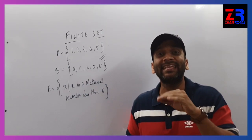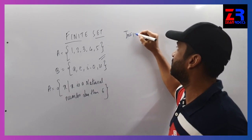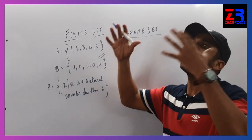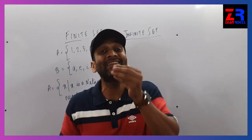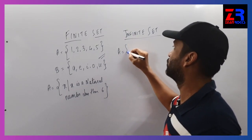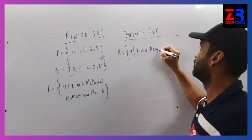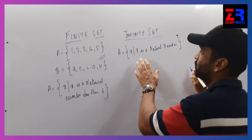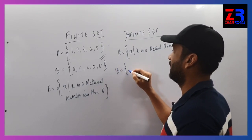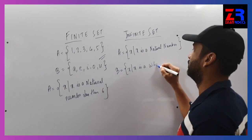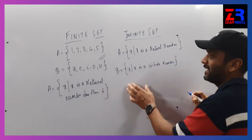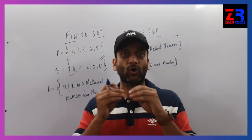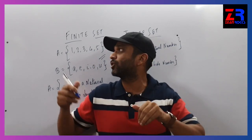There is one more type called an infinite set. Infinite means which cannot be counted. For example, X such that X is a natural number - is it countable? No, it is not countable, that is why it is an infinite set. B is equal to X such that X is a whole number - not countable. X is a star in the sky - we cannot count. Those sets are called infinite sets; sets we can count are called finite sets.